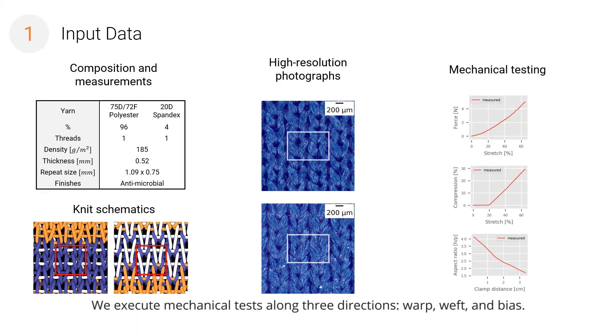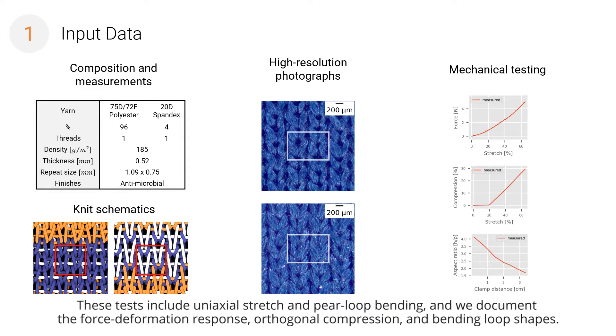We execute mechanical tests on three directions: warp, weft, and bias. These tests include uniaxial stretch and pear-loop bending, and we document the force-deformation response, orthogonal compression, and bending-loop shapes.